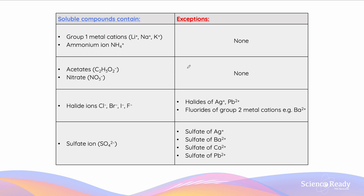Here are the general solubility rules for soluble compounds. The solubility table describes which ionic substances containing which ions are soluble in water. The left side tells us which types of compounds are soluble and on the right, exceptions to that rule. All compounds containing group one metal cations — lithium, sodium or potassium — are soluble, as well as all ammonium-containing compounds, with no exceptions. The same applies for acetates and nitrates. Halide ions are also all soluble in water except for halides of silver and lead, as well as fluorides of group two metal cations like barium — for example, barium fluoride is insoluble. Sulfates are all soluble except for silver, barium, calcium and lead.